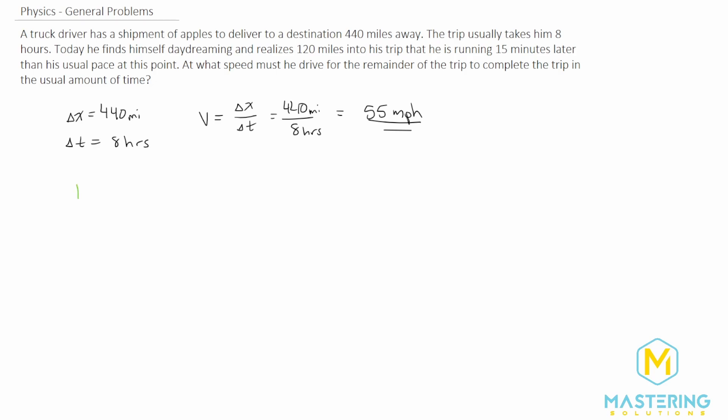Now what I'd like to do is to draw a little diagram to represent what's going on, a little picture. So we know that the whole trip is 440 miles, but we're only 120 miles into the trip. So how much is left? So 440 subtract 120 is going to be 320. So this is how much we have left to do.